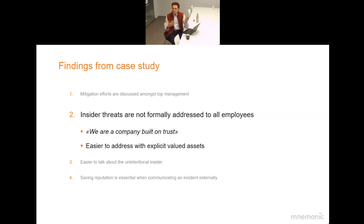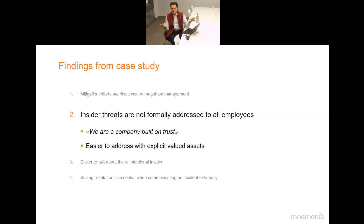When assets are more intangible — like intellectual property — it becomes much harder to define what the value is and what employees should or shouldn't share. At a company like Mnemonic, where IP is everything, how do you communicate to employees that what they know is the company's value? Similarly, think of a bank: back when banks held gold and cash, everyone understood you don't give every employee the key to the vault. But with intangible assets, governance becomes much less obvious.